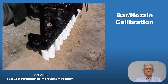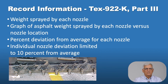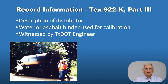The bar nozzle calibration procedure involves placing containers under each nozzle, turning the nozzles on for a prescribed period of time, and measuring the quantity of asphalt binder or water collected in each container. A graph of the asphalt weight sprayed for each nozzle across the bar is recorded and the deviation from the average for each nozzle is calculated. The specification requires that individual nozzle deviations be limited to no more than 10% from the average. Tex 922K Part 3 is the distributor calibration and must be witnessed by TxDOT engineers.